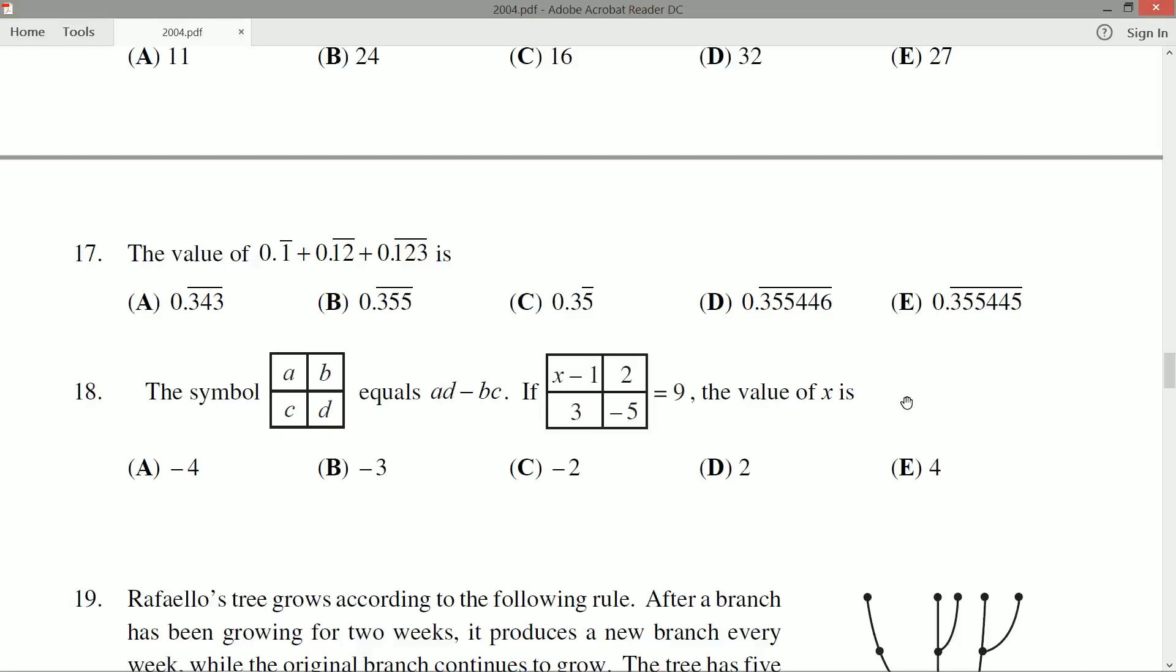The value of 0.1, and the little bar over that means repeating, so 0.1111111, it just keeps going, plus 0.12, now the 12 repeats, so 0.121212 and so on, plus 0.123123123 and so on. Okay, so we've got some more expressions here with repeating digits.